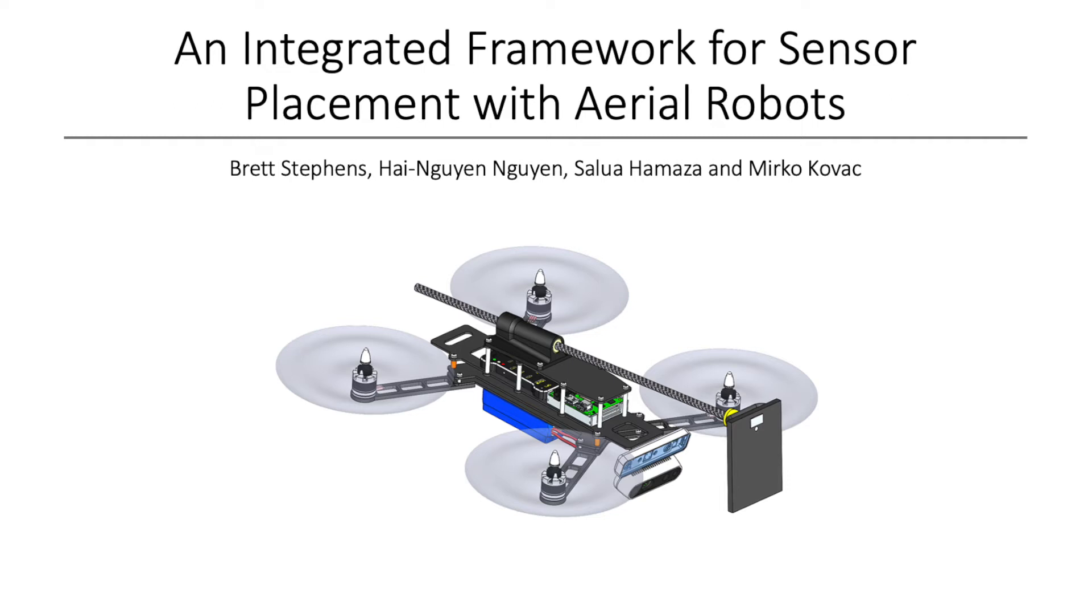Considering a quadrotor's intrinsic constraints and sensing capabilities while minimizing the design and actuation requirements, we present here an integrated mechatronic navigation and control approach for robust autonomous sensor placement without reliance on external computation or sensing aids.